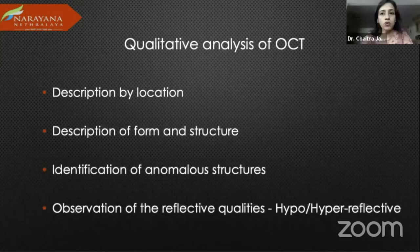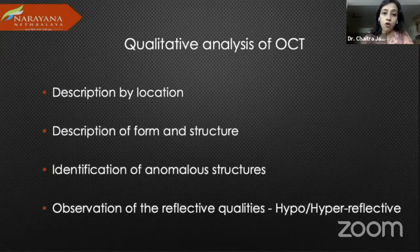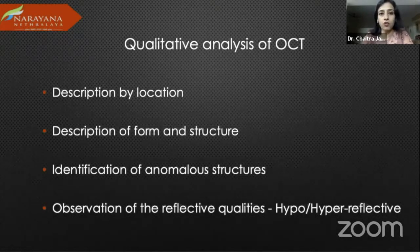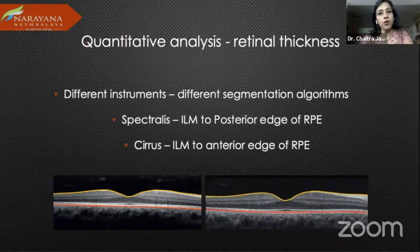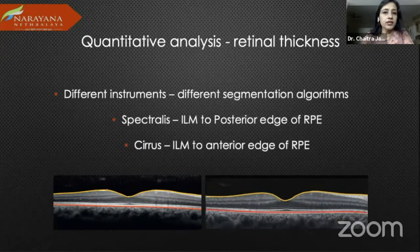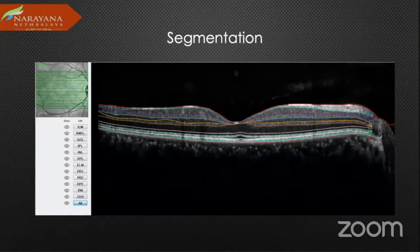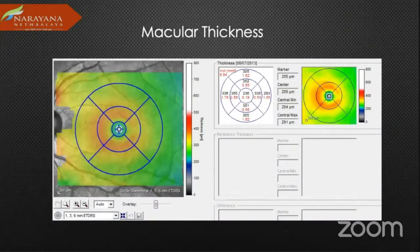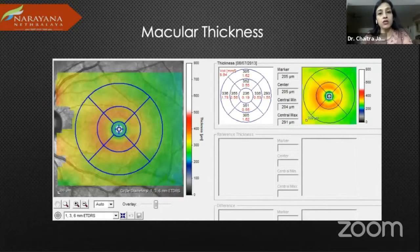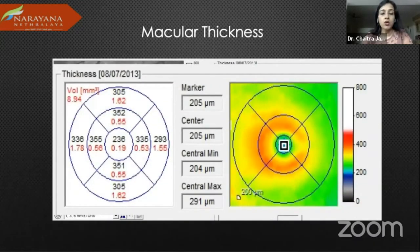That covers the different layers and how they look on a normal scan. For qualitative analysis of OCT, you describe by location, form, and structure. If you see anomalous structures, you need to identify them along with their reflective qualities. Going on to quantitative analysis, this becomes especially important when treating patients. Different instruments have different segmentation algorithms to look at retinal thickness. Macular thickness is especially important because macular disease directly affects visual acuity and quality, and it allows us to compare response to treatment.